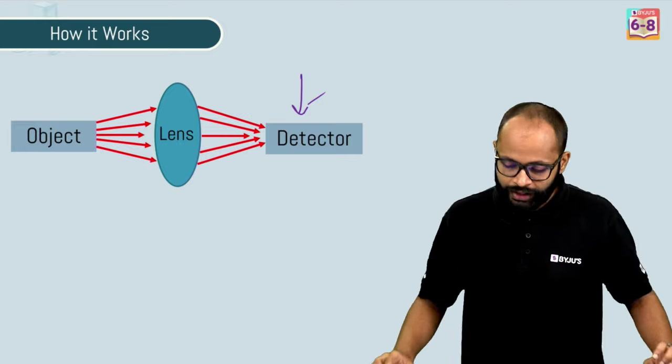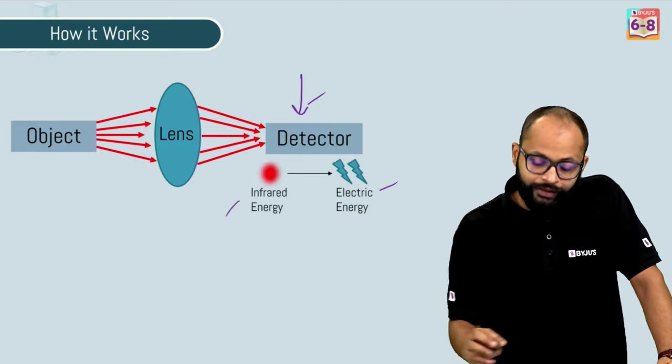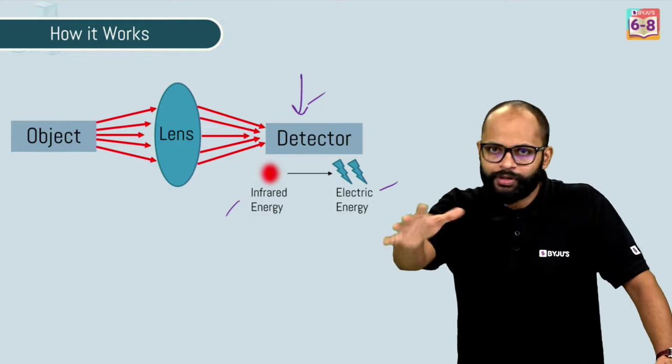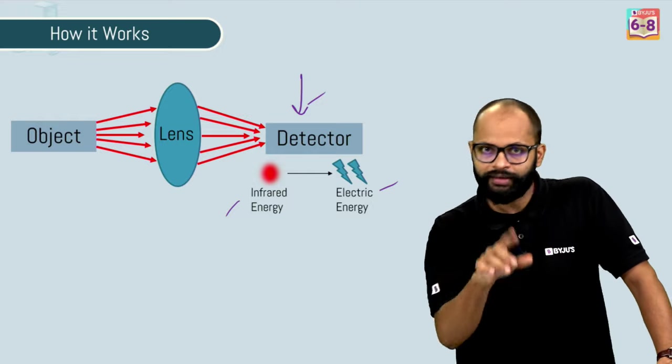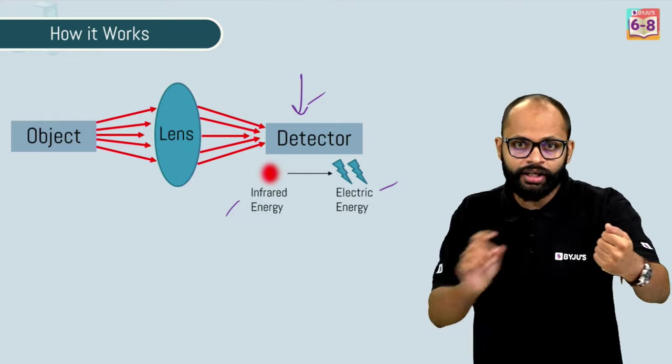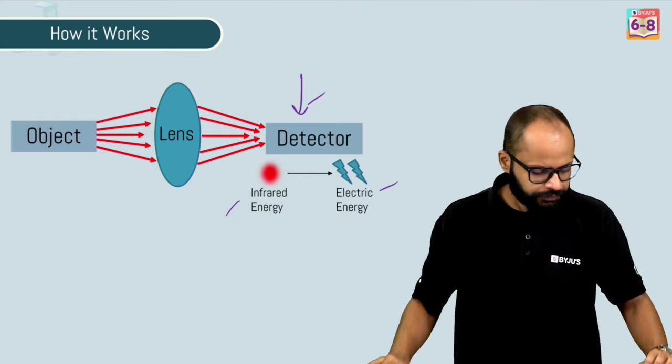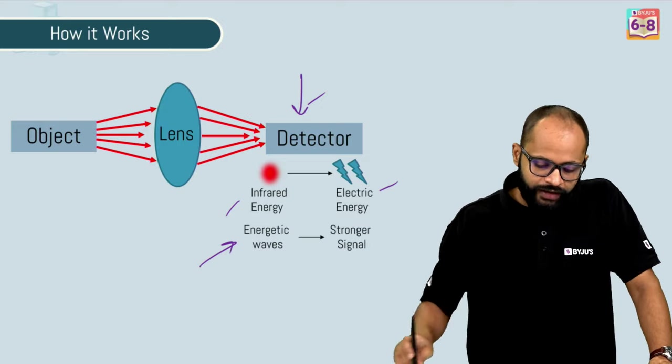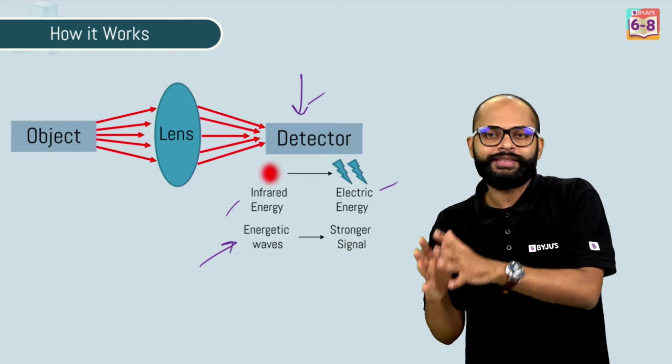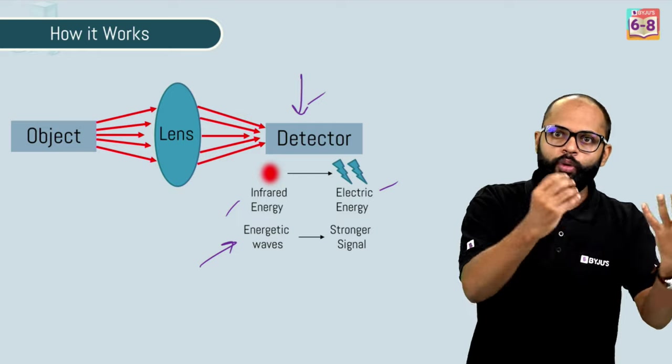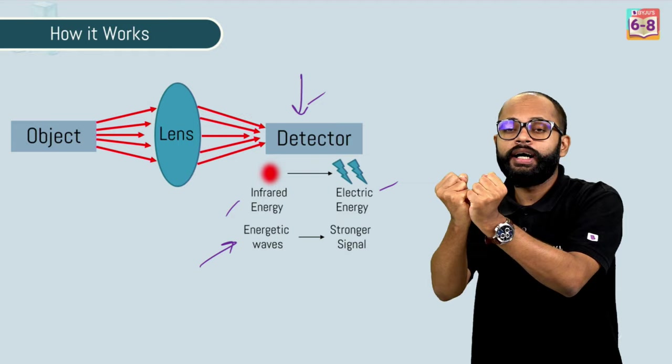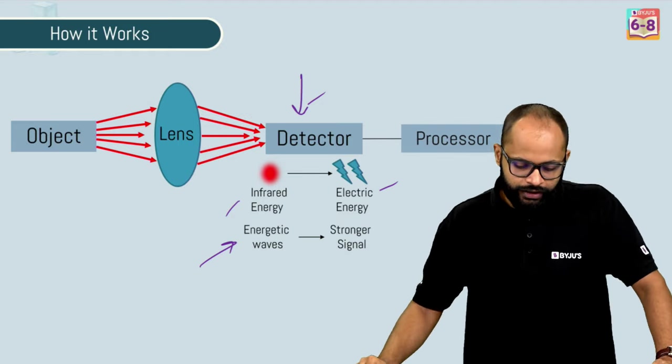Now, the job of detector is to convert this infrared energy into electric signals. We need electric signals because that's how all the processing happens. And finally, we see this digital thermometer reading. The job of detector is to convert electromagnetic radiation, that is the infrared radiation into electrical signals. If the waves are more, or if more infrared radiation is coming, stronger is the signal. Hotter the body, more strong is the infrared radiation or more infrared radiation or you will get powerful electrical signals.